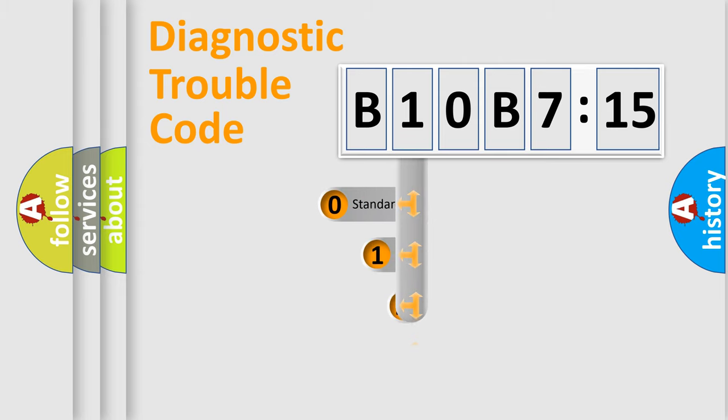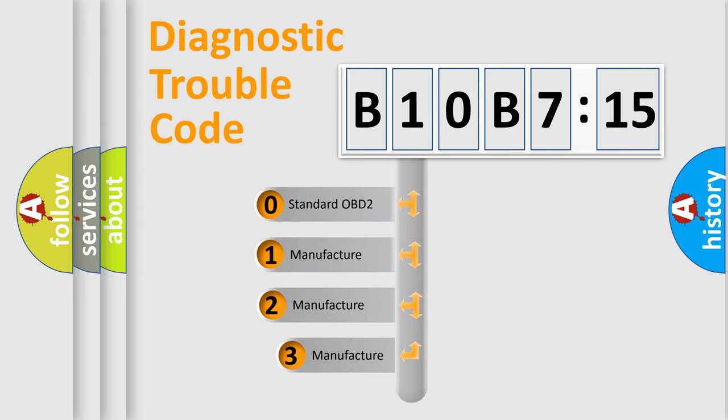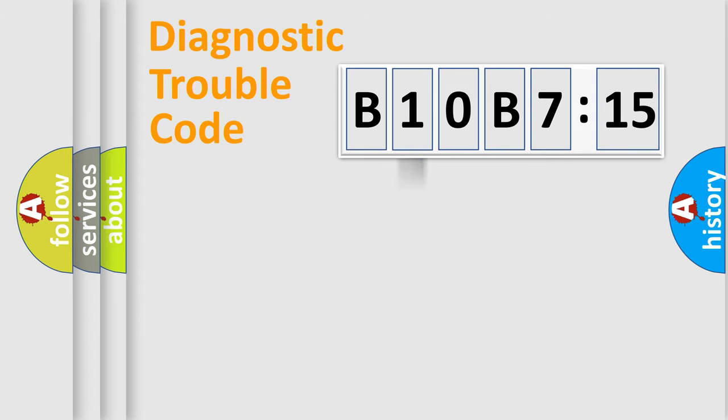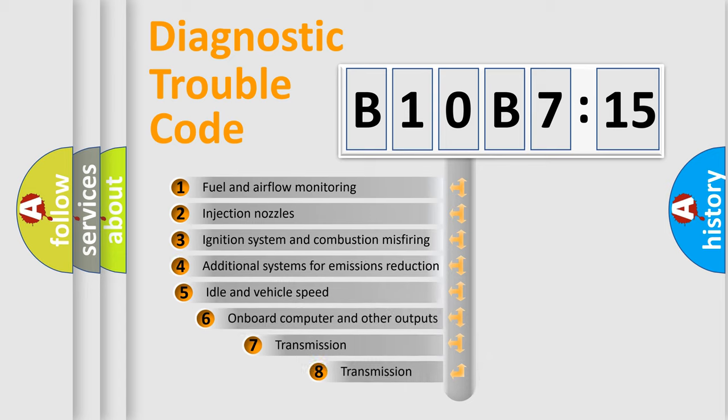This distribution is defined in the first character code. If the second character is expressed as zero, it is a standardized error. In the case of numbers 1, 2, or 3, it is a manufacturer-specific expression of the car-specific error.